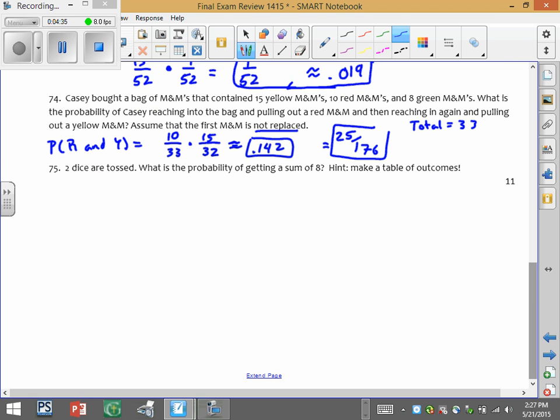Two dice are tossed. What's the probability of getting a sum of 8? So when the two dice are tossed, remember, the first die can be a 1, 2, 3, 4, 5, or 6. The second die can be 1, 2, 3, 4, 5, 6. And when you roll those two dice, you add those up.